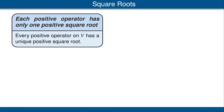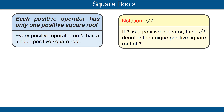Recall also that we previously stated the following result: every positive operator on V has a unique positive square root. This leads to the obvious notation — if T is a positive operator, then we use the usual square root notation to denote the positive square root of T.